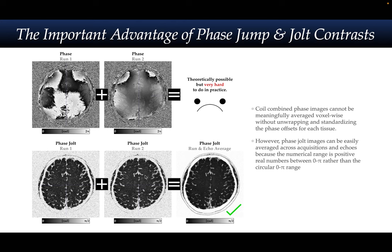As a result of this, one can straightforwardly average multiple runs to get a single high-SNR phase jolt image. Due to the nature of the computation, there is a natural minimum and maximum point in phase jolt images: the minimum is 0 and the maximum is π. However, note that we have chosen to visualize the phase jolt image using π/2 as the maximum.